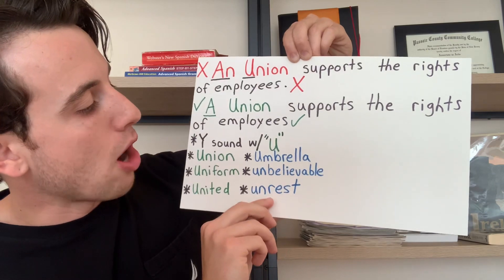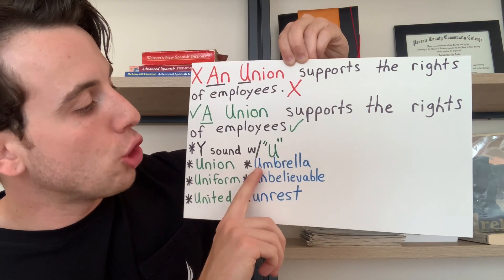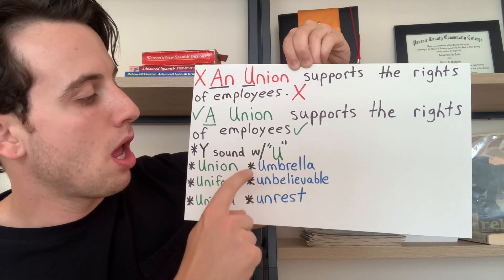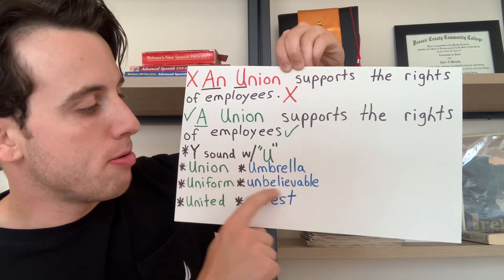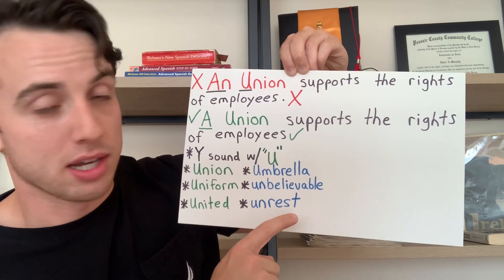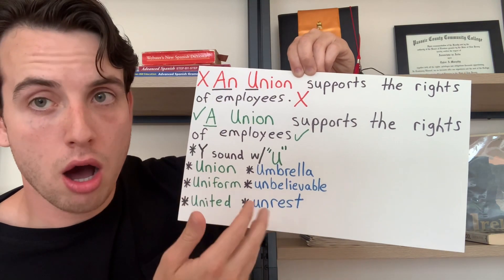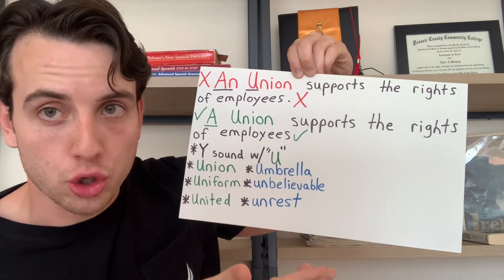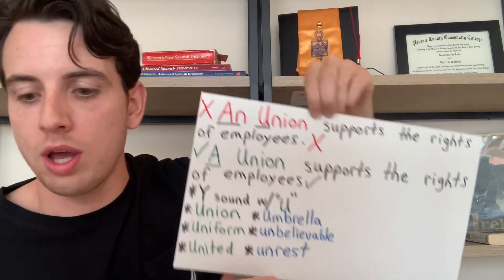Now, words that begin with U and have the 'uh' sound: umbrella, unbelievable, unrest. So it's the difference between 'yoo' and 'uh' — two different sounds requiring two different articles.